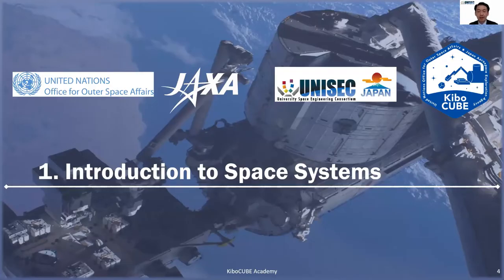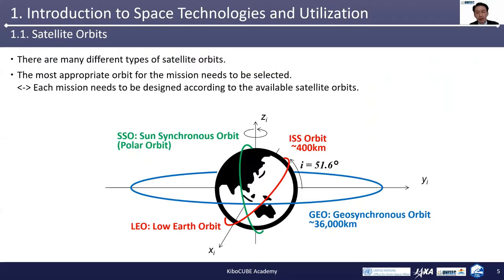The first chapter is the introduction to space systems. First of all, we need to understand about satellite orbits when we talk about space technology utilization. There are many different types of satellite orbits. I have illustrated several typical satellite orbits in this figure. The blue one is the geosynchronous orbit, also called GEO. The orbit altitude is about 36,000 kilometers. Geostationary satellites are located on this orbit and they are rotating around the Earth once a day with the same rotational velocity of the Earth. So when you look up, these satellites seem to be at the same position in the sky throughout the day, generally speaking.